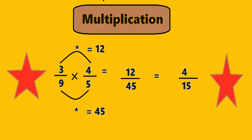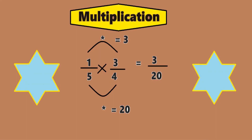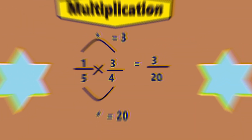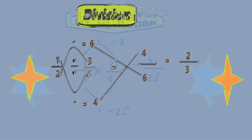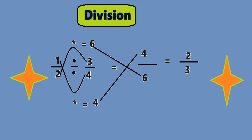Second example is 1 by 5 into 3 by 4. Now multiply 1 into 3 which will give us 3, and that is the numerator. And 5 into 4 which will give us 20, and that is the denominator. The answer is 3 by 20.